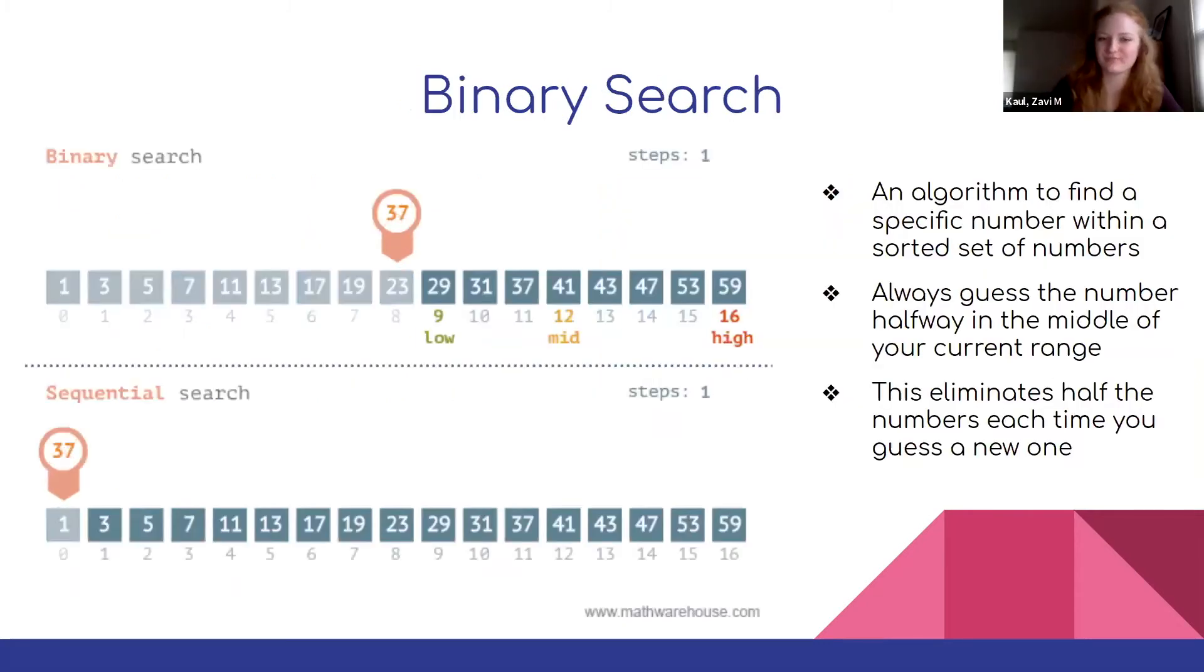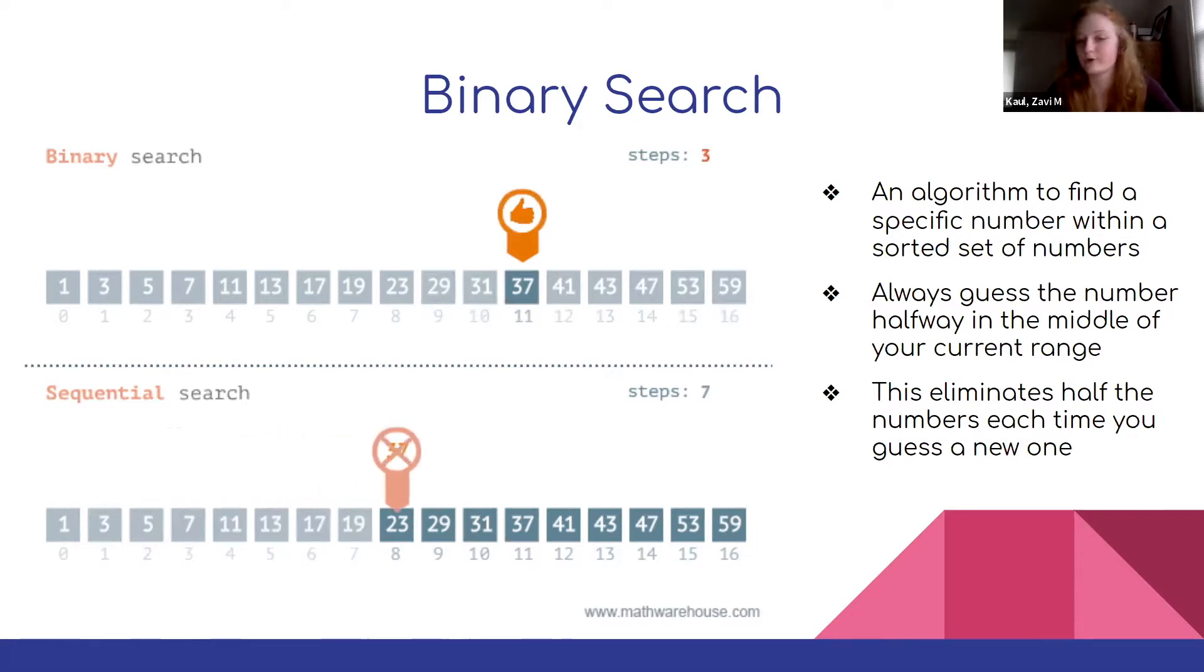So moving on, binary search is the algorithm we'll be talking about today. Binary search is an algorithm to find a specific number within a set of numbers. It only works if the numbers are already sorted in numerical order. When you want to guess the chosen number, always have your next guess be in the middle of your current range. This eliminates half of the numbers with each guess, guaranteeing that you guess the correct number within six guesses. This visual shows a binary search algorithm performing compared to a sequential search algorithm, which is just guessing each number sequentially.